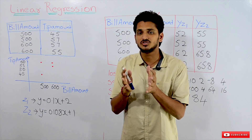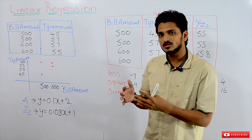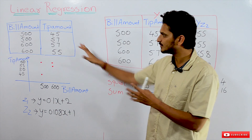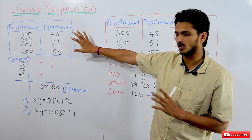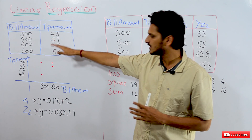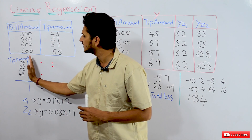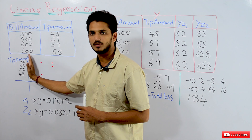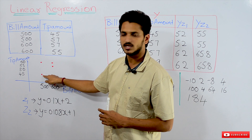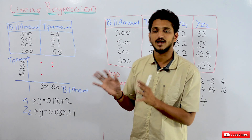We can represent this data in a two-dimensional coordinate space. The X axis has the bill amount and the Y axis has the tip amount. For a bill amount of 500, we have a tip amount of 45, so we made a data point there. Like that, we plotted all the data.